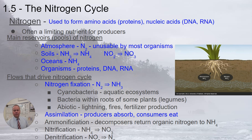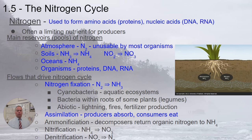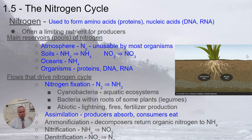Ammonification is the process where decomposers in the soil return nitrogen into the form of NH4 ammonium. Organic material like dead roots, leaves, and animals can be transformed into ammonium through the action of decomposers. The process called nitrification takes ammonium — NH4 — and transforms it into nitrate — NO3 — a form more accessible to most plants. And denitrification is the reverse: transforming that usable nitrate back into N2, the form that's much less usable.